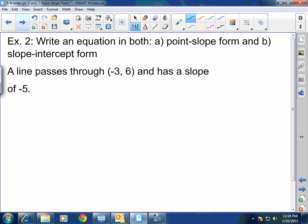Let's do another one. Write an equation in both point-slope form and slope-intercept form for the following. A line passes through negative 3, 6 and has a slope of negative 5. So what's my slope? Remember, you always find slope first. My m equals negative 5, done. What's my x₁, y₁? This is x₁, this is y₁. You with me?